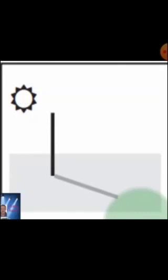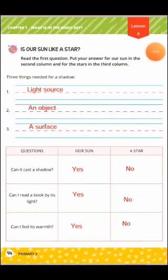We need three things for a shadow. First: a light source — مثلاً الشمس. Second: an object — زي الرولر أو العمود. Third: a surface — السطح اللي هيتكون عليه الشادو. So, three things needed for a shadow are: a light source, an object, and a surface.